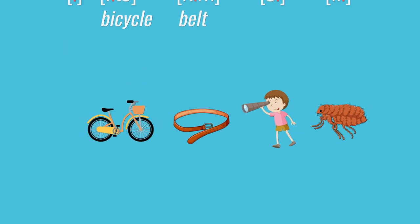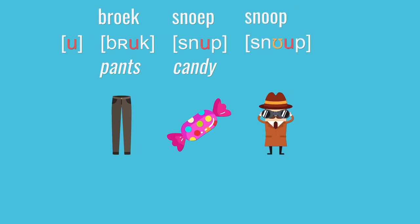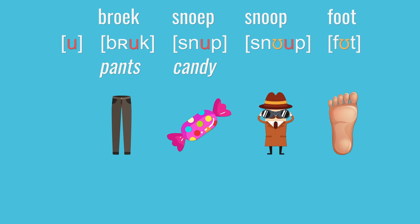Let's move to our next vowel. U as in brook or snoop, which shows up in IPA as a lowercase u. It should sound relatively familiar, as in English as snoop. Just be careful with it. In most accents of English, we actually start words like snoop with a different vowel — it's the same vowel as in foot — so we go: foot, snoop. In Dutch, we go straight to U, so instead of snoop, it's snoop.